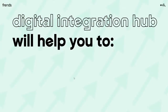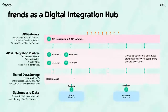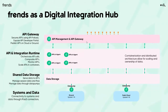Not to worry — digital integration hub to the rescue! What the digital integration hub enables is an ideology where we split the whole API platform into three separate layers: we have our API management and API gateway layer on top — securing our APIs, building composite APIs and API products — but it seamlessly combines those capabilities with the API runtime and the shared data storage that actually serves the data for the APIs.